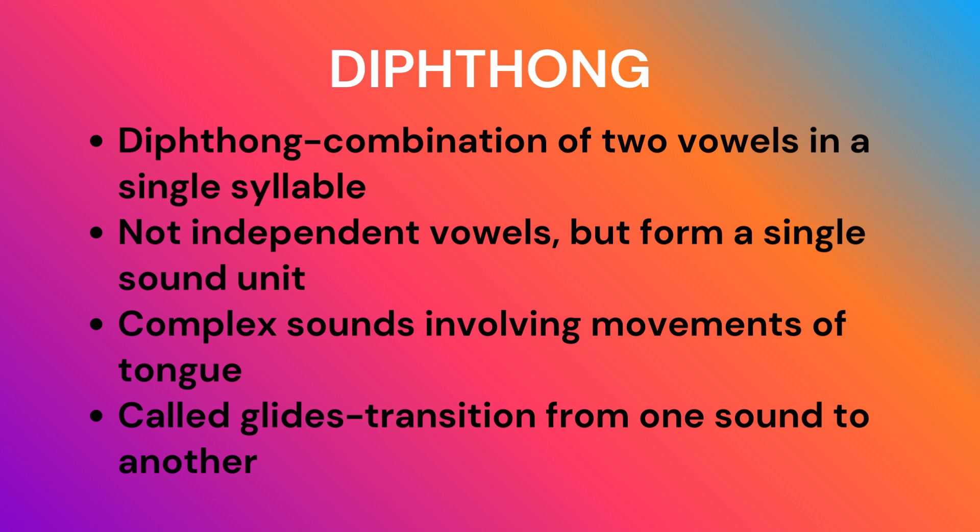There are also complex sounds where our tongue, unlike in the production of vowel sounds or monophthongs, moves from one position to another. Diphthongs are called glides because there is a transition from one vowel sound to another, and they add some harmony to our speech. Finally, diphthong is one of the three categories of English sounds. The other two categories are vowels, also known as monophthongs, and consonants.